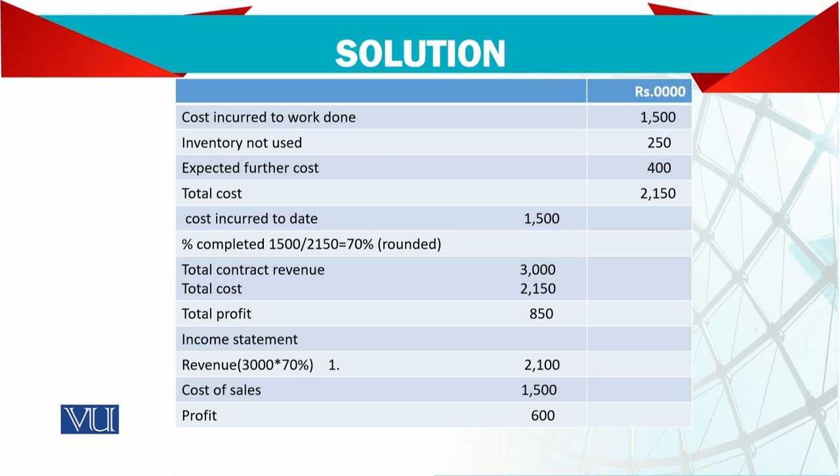Cost incurred to date is 1.5 million, so the percentage worked out to total cost comes to around 70%. This means approximately 70% of the job is complete. Total contract revenue is 3 million and total cost is 2.15 million, so total estimated profit is going to be 850,000.